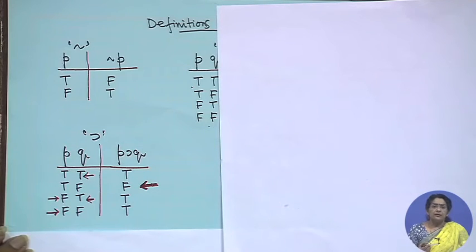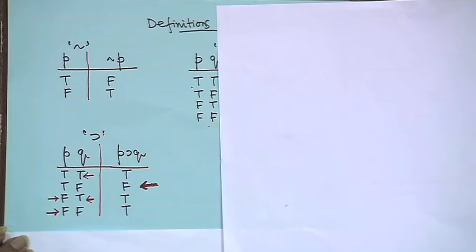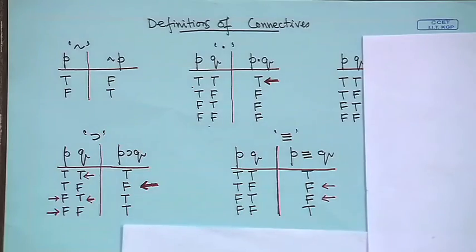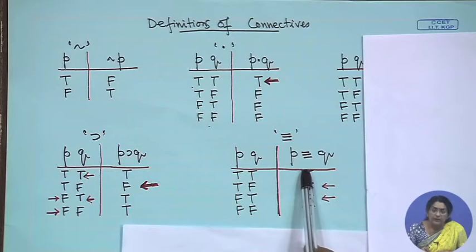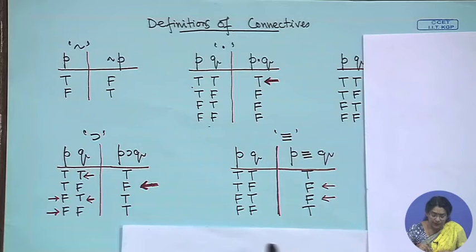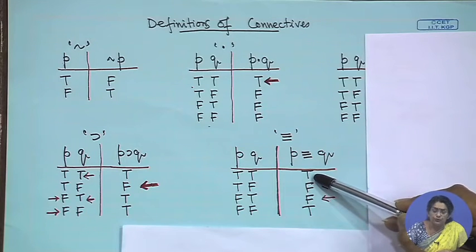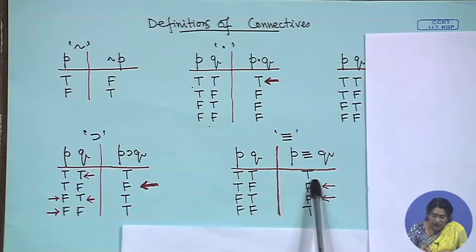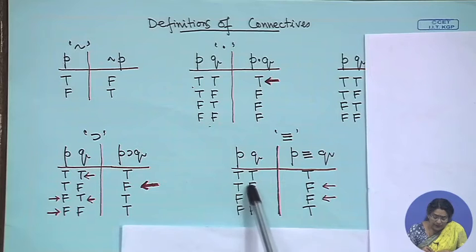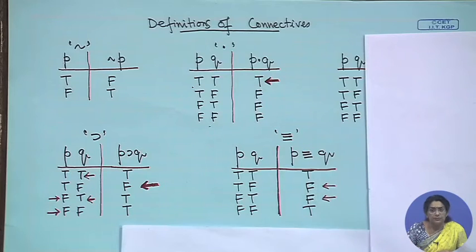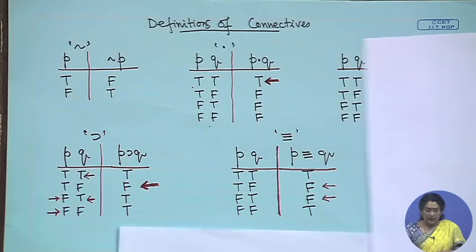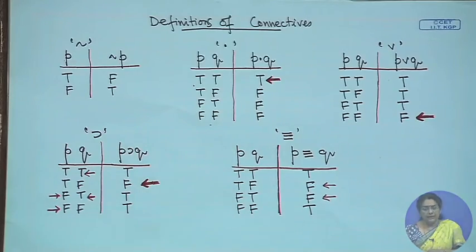Please read the truth table for the horseshoe closely. For the triple bar (material equivalence, p ≡ q): whenever the values match or are equal, p ≡ q is true — true-true gives true, false-false gives true. Only when the values mismatch — one true, one false — does p ≡ q become false. This is our quick introduction to all the connectives.